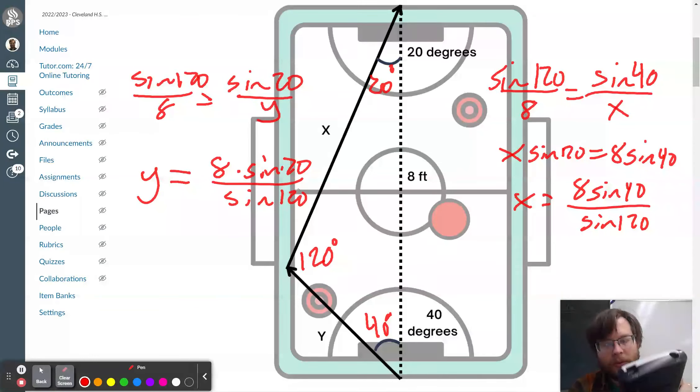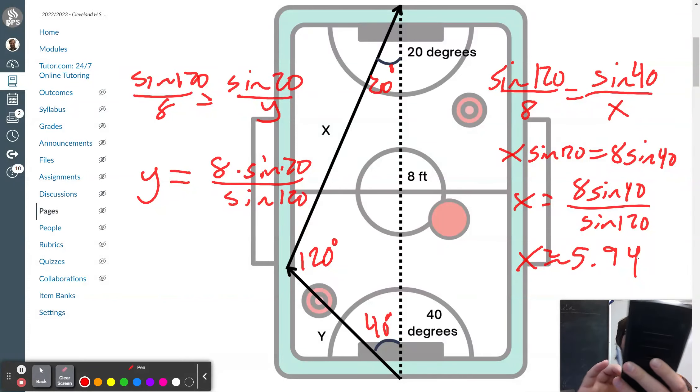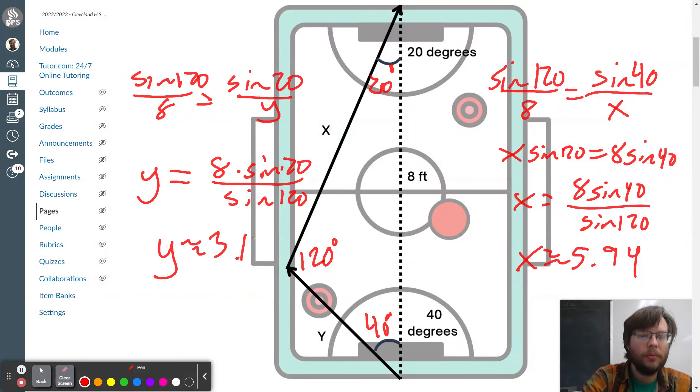I'm going to cross-multiply to get x times sine of 120 equals 8 times sine of 40. So x is 8 times sine of 40 divided by sine of 120. This is going to be basically the same thing, 8 times sine of 20 divided by sine of 120. Make sure that when you're typing it in, that you use parentheses around your angle, sine of 40, parentheses. And so this one is for x, is approximately 5.94. Go back to my thing and type in sine of 20 instead, y is approximately 3.16.